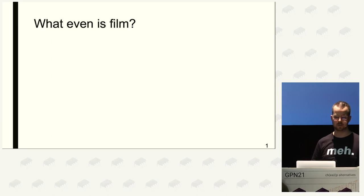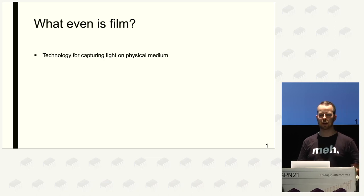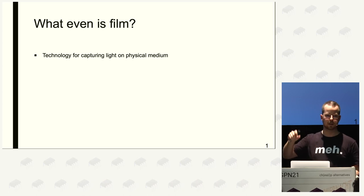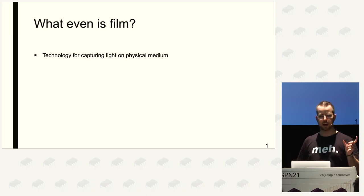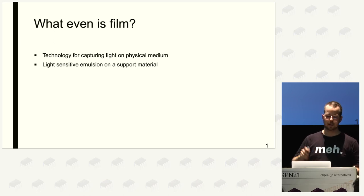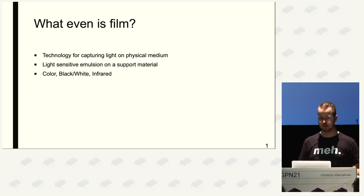So what even is film? It's a technology for capturing light on a physical medium. Instead of encoding data to ones and zeros like a digital camera sensor, you have a physical film that has the information stored on it. It is a light-sensitive emulsion on a support material. The three most common types are color film, black and white film, and infrared film.